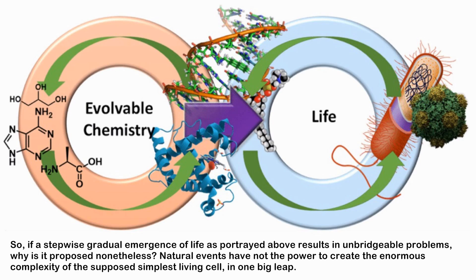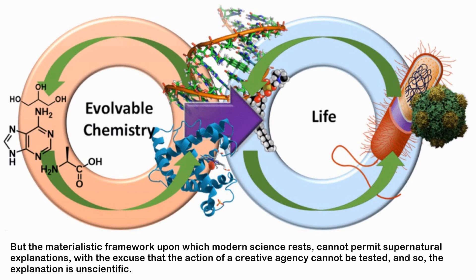That framing is rather funny — it is like asking a woman 'are you pregnant?' and she replies 'I am in a phase of increase of non-pregnancy to pregnancy.' So if a stepwise gradual emergence of life results in unreachable problems, why is it proposed nonetheless? Natural events do not have the power to create the enormous complexity of the supposed simplest living cell in one big leap.